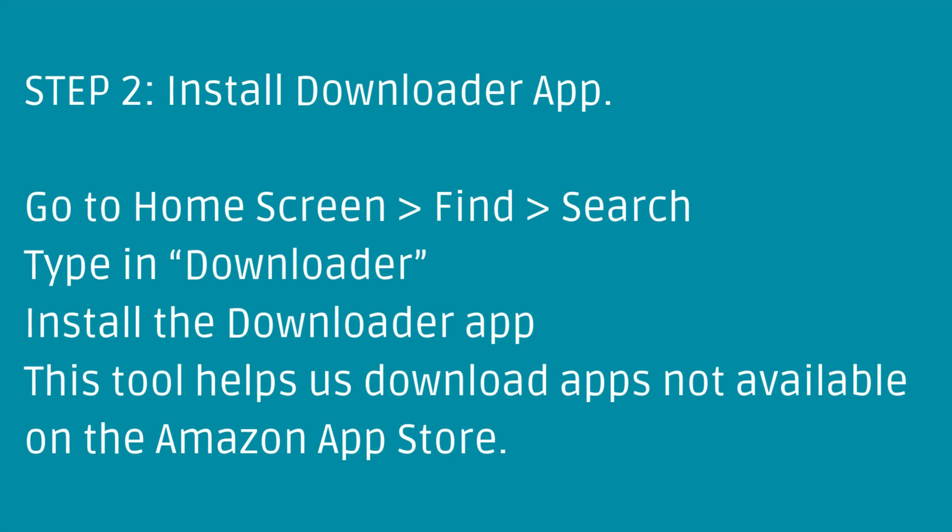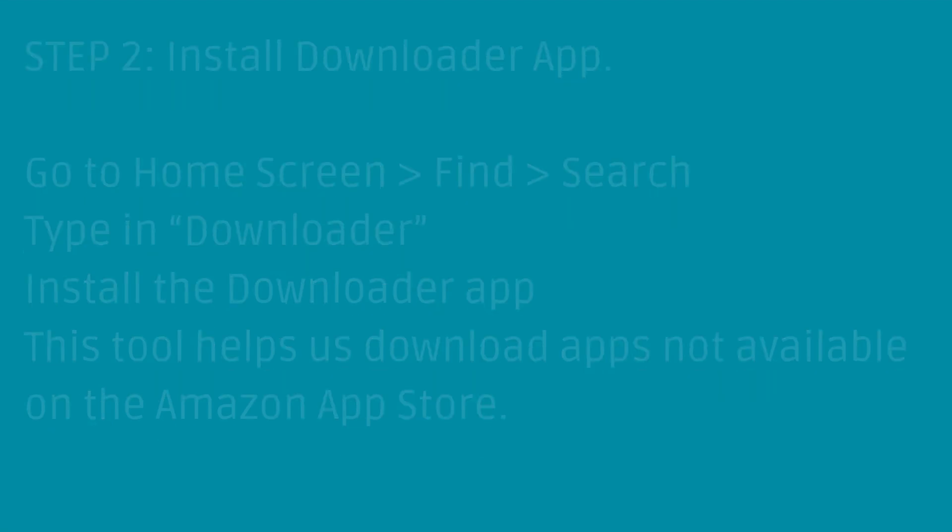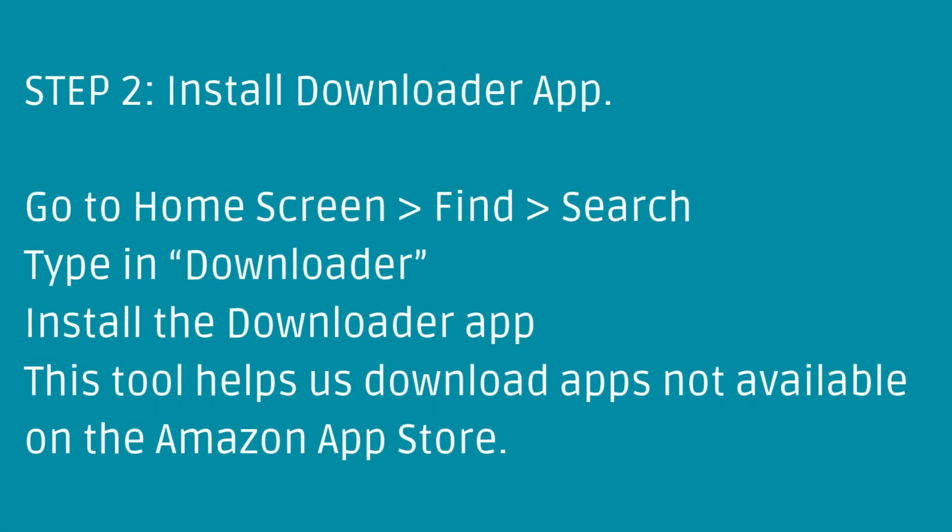Step 2: Install the Downloader app. Go to the Home Screen, find Search, and type in Downloader. Install the Downloader app. This tool helps us download apps not available on the Amazon App Store.